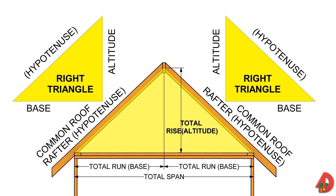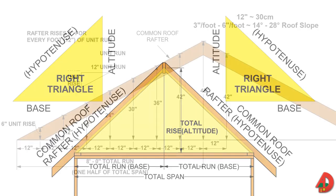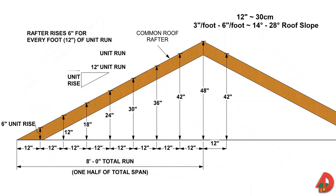Carpenters need the following information in order to frame a sloped roof: total span, which is the overall width of a building; total run, which is half of the total span; and total rise, which is the actual height of the roof measured from the top wall plate to the ridge of the roof. Pitch refers to the angle or slope of the roof, and the amount of pitch is determined by the unit rise.